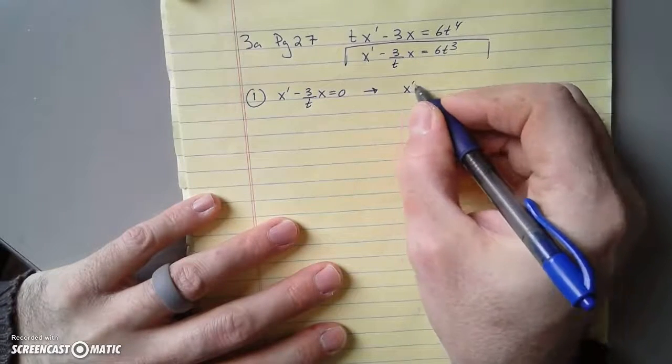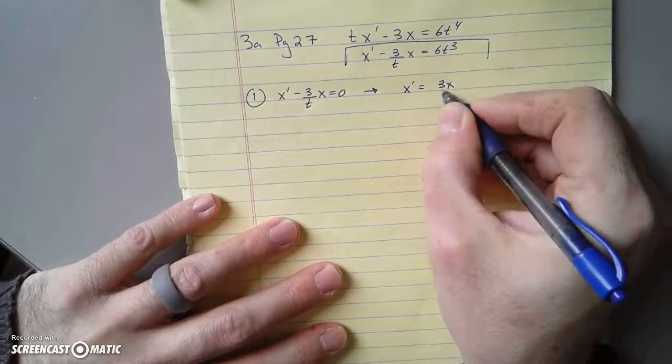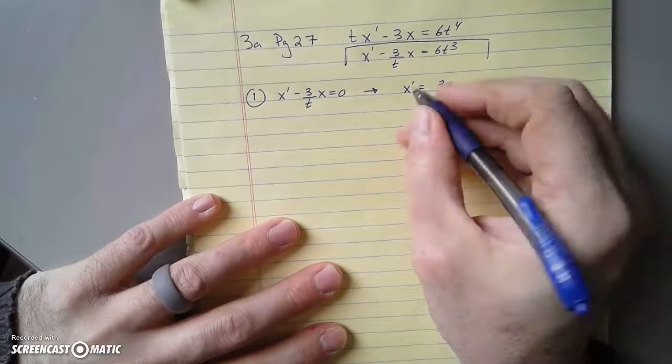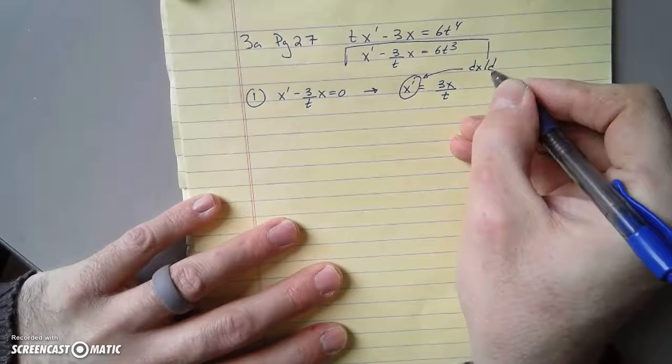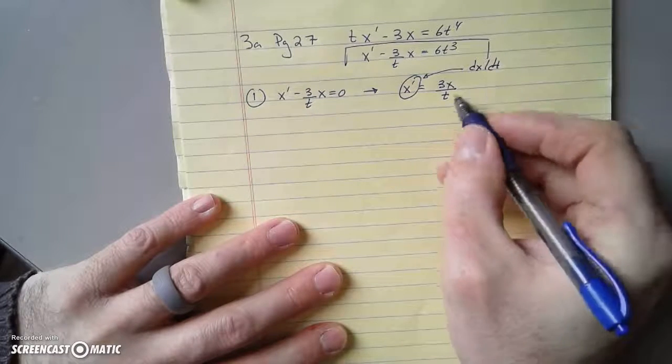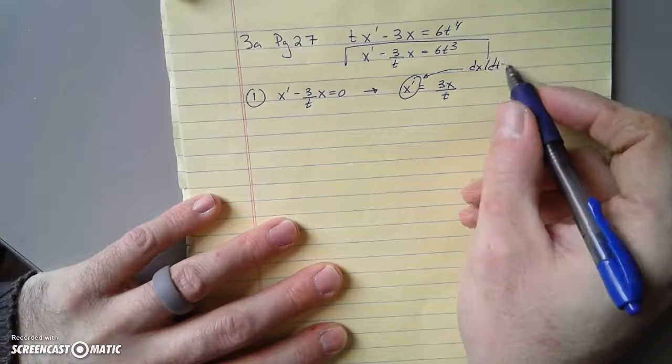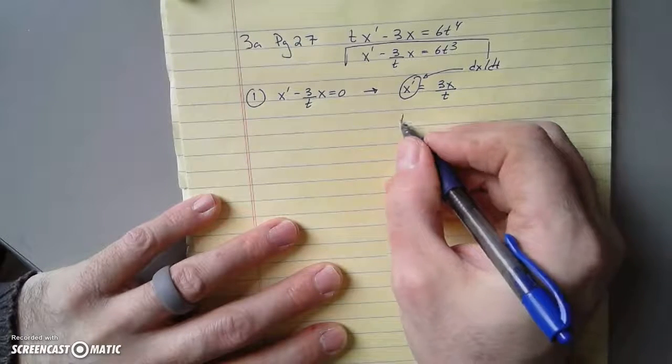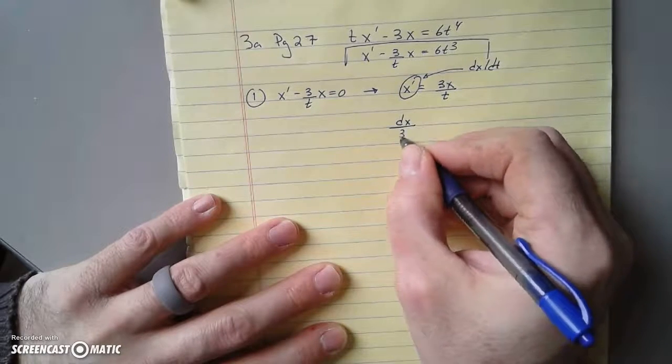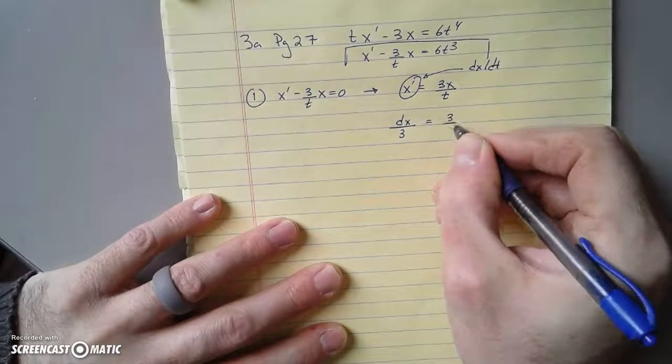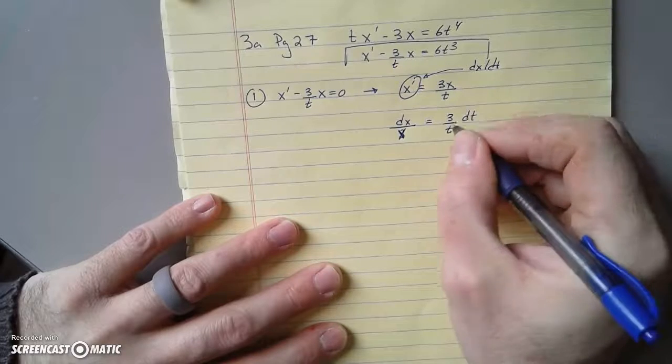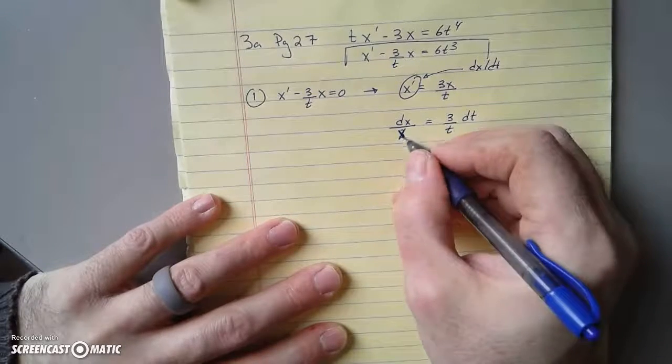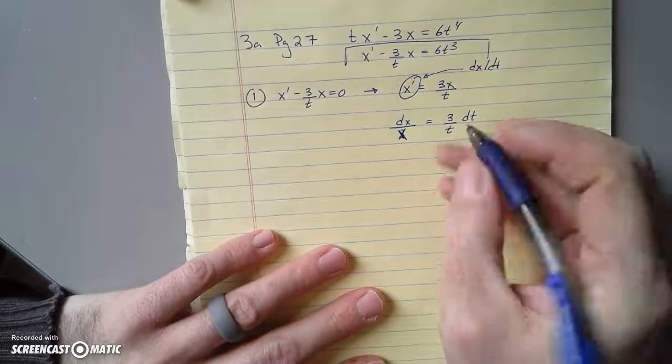Well, we separate variables, so x' = 3x/t. Remembering that this is dx/dt. So we multiply both sides by dt, divide by x. We'll get dx/x = 3dt/t. And this 3 can go anywhere you want, but I usually just keep stuff on the right hand side.